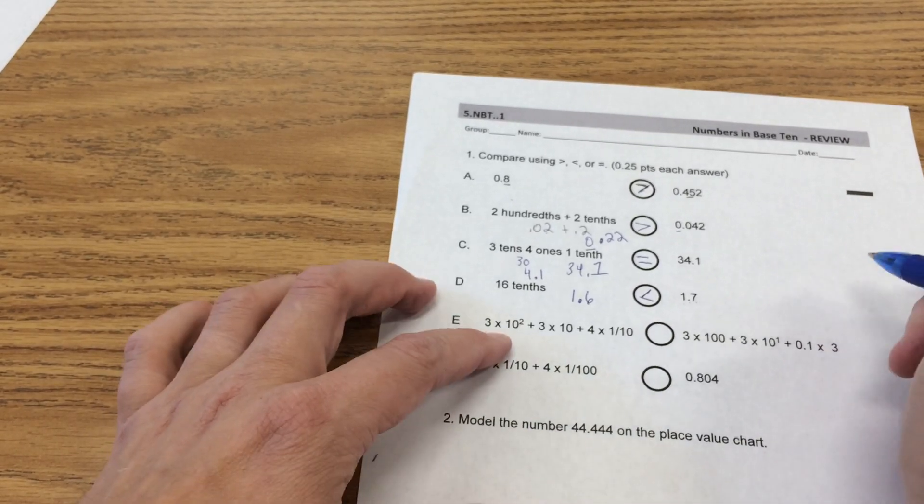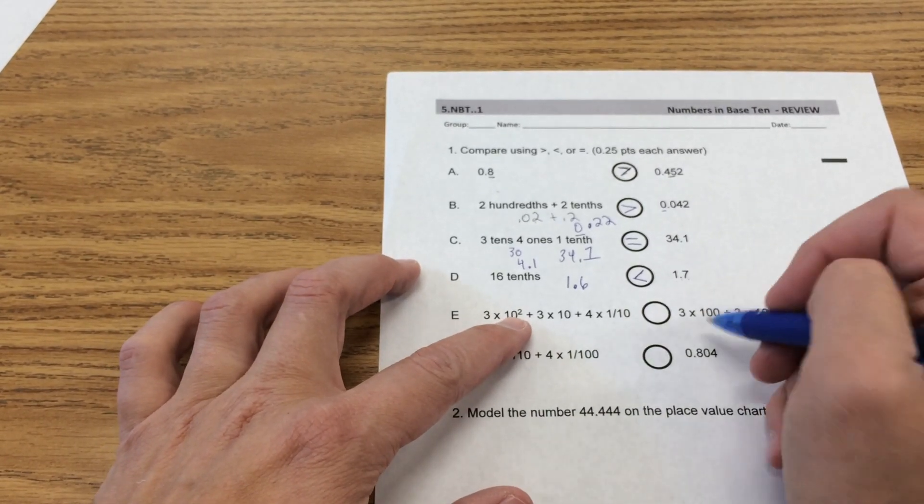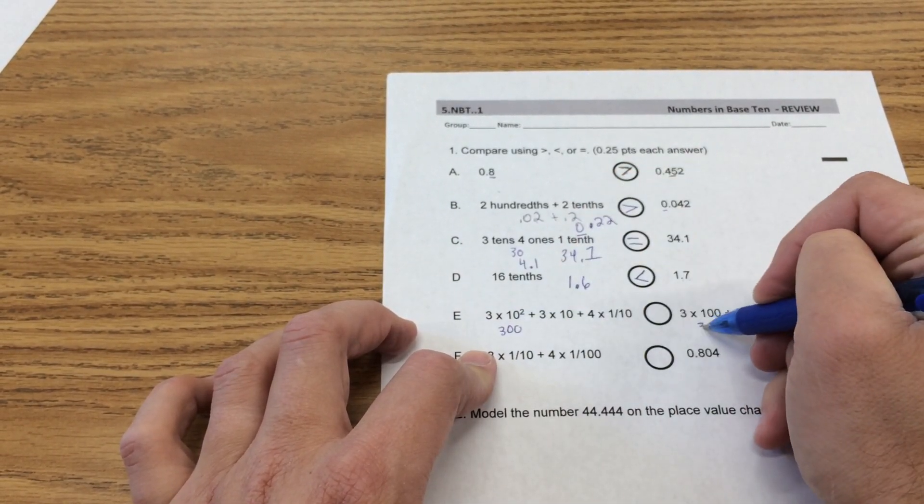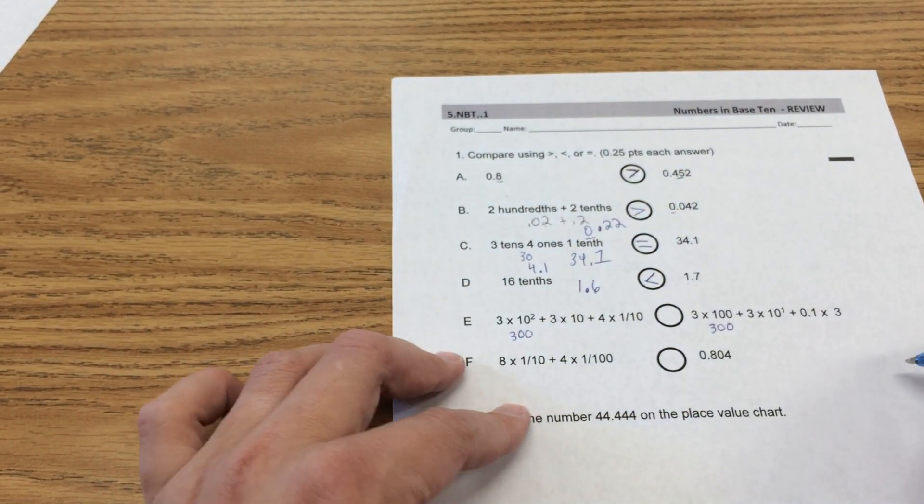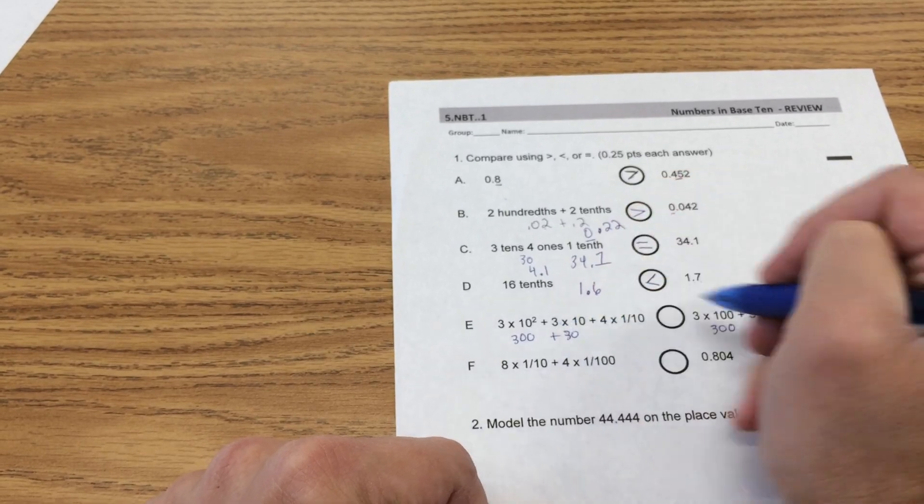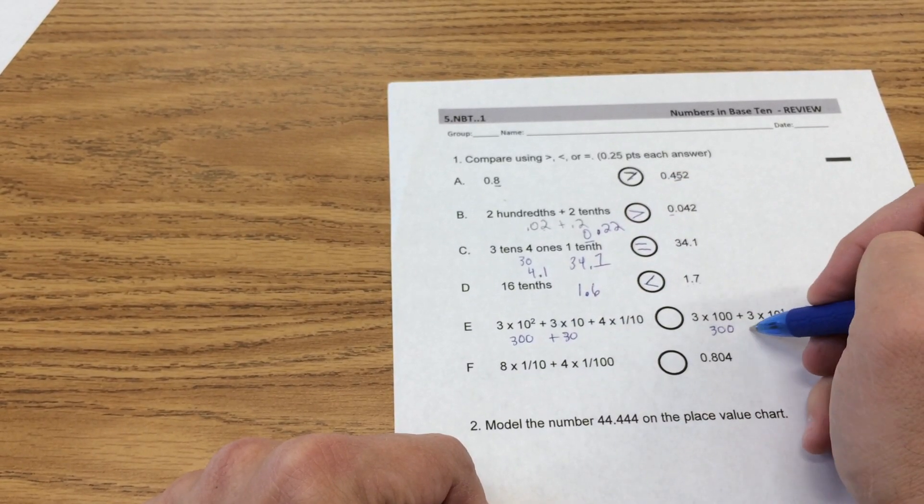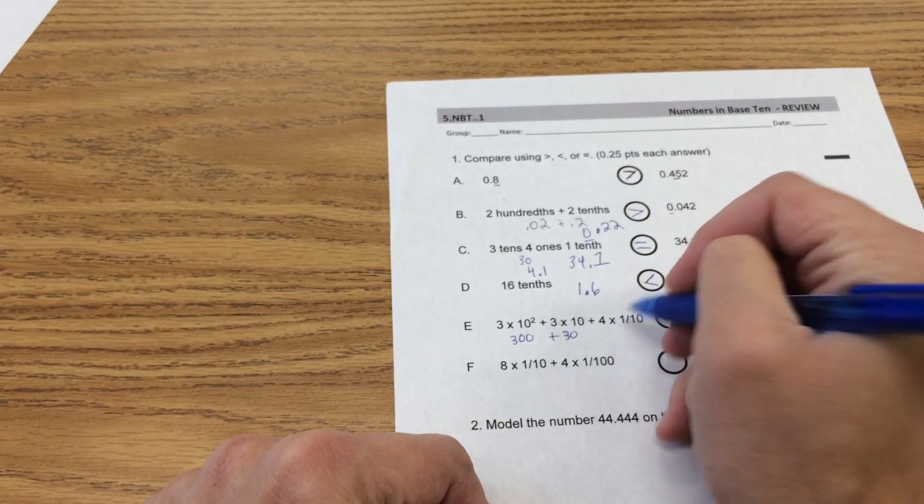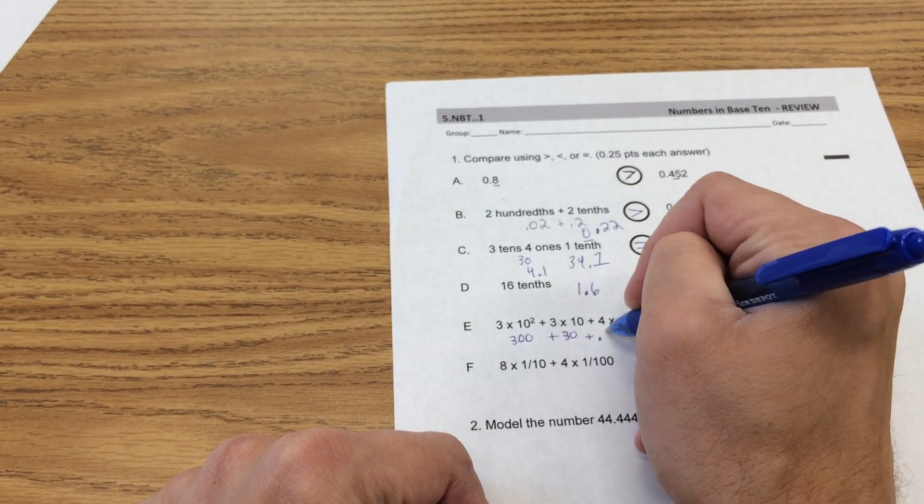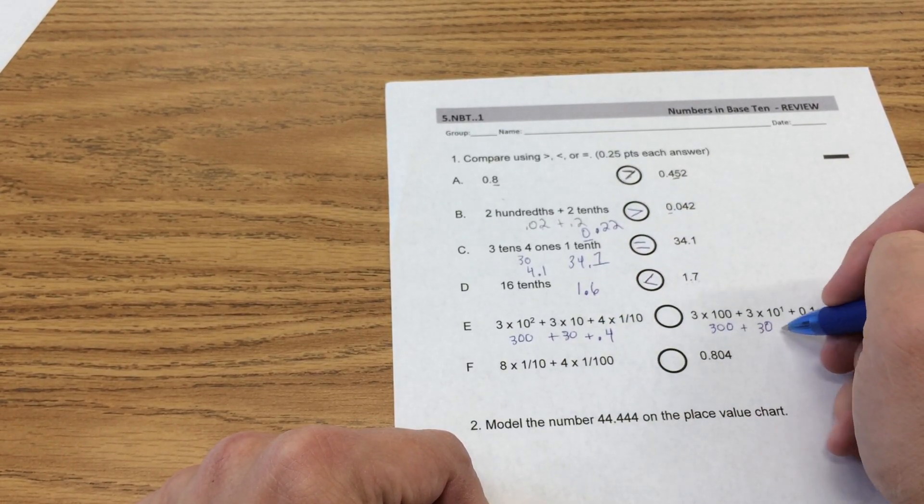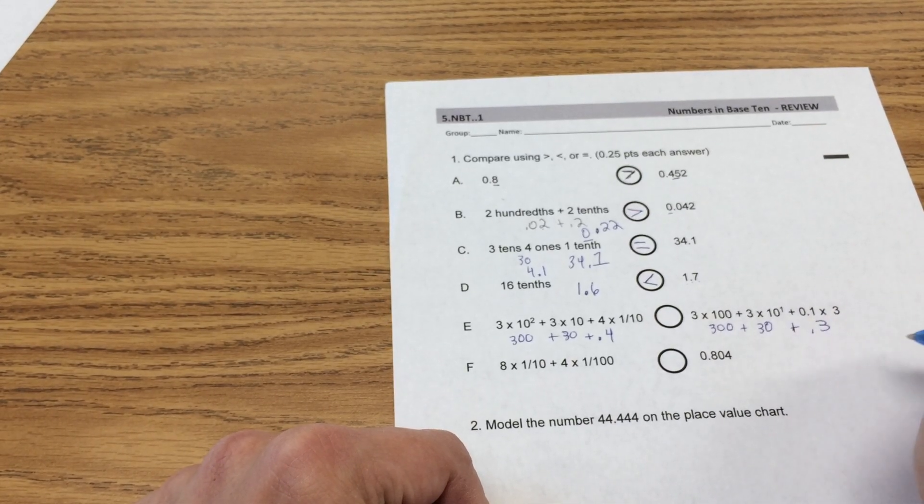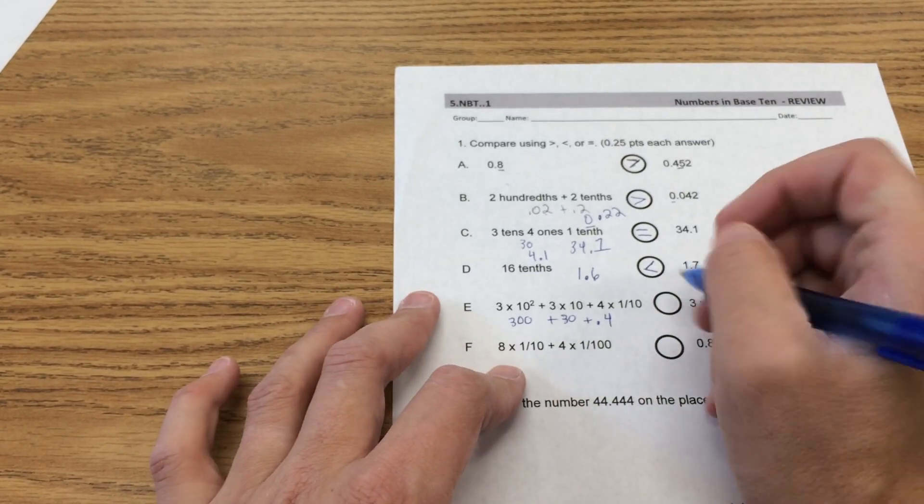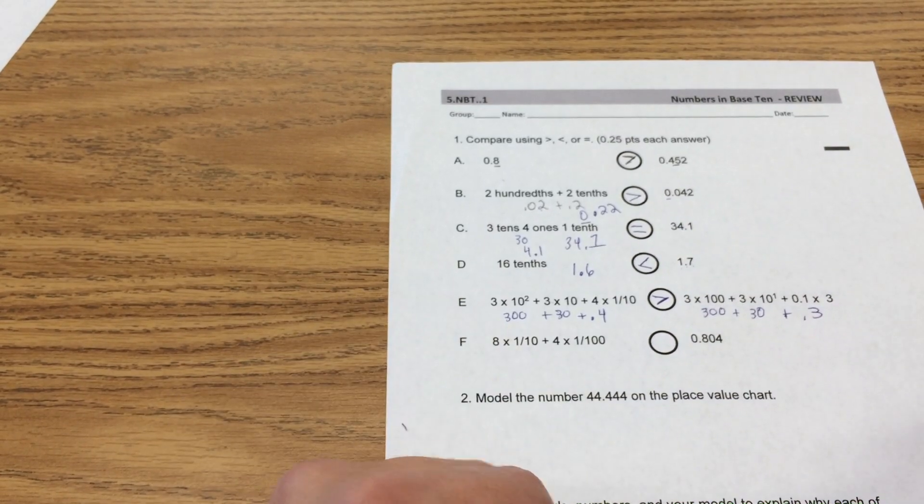Let's see. 3 times 10 squared. Well let's just look over here. 3 times 100. Well 10 squared is 100, so 300. 300. 3 times 10, 30. 3 times 10 to the first power, which is still just 3 times 10, 30. Now 4 times 1 tenth is 4 tenths. 3 times 1 tenth is 3 tenths. So 330 and 4 tenths versus 330 and 3 tenths. It has to be 330 and 4 tenths.